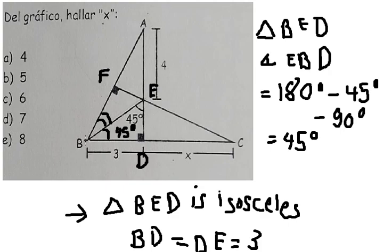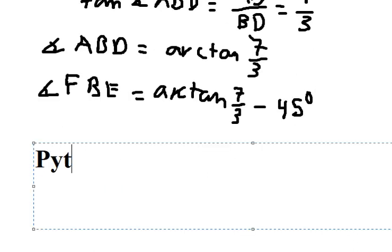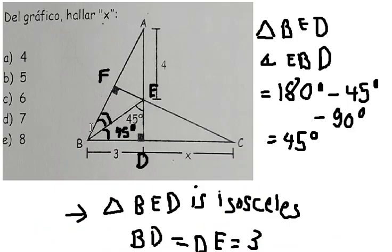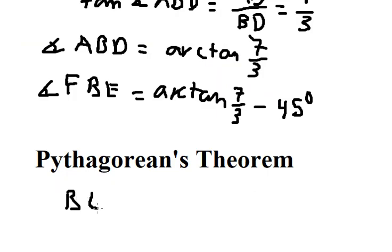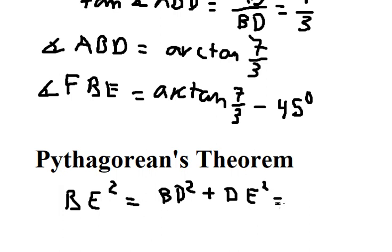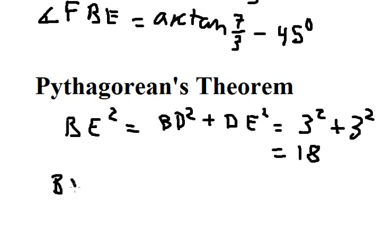Now for triangle BDE, we see that we have one right angle, so we can apply the Pythagorean theorem. BE squared equals BD squared plus DE squared. We know BD and DE are both number 3, so BE squared equals 18. Taking the square root of both sides, BE equals 3 times the square root of 2.